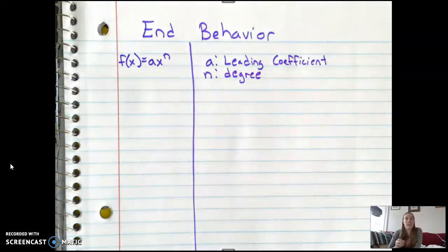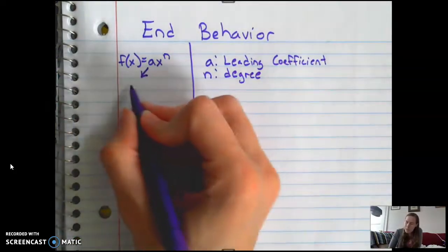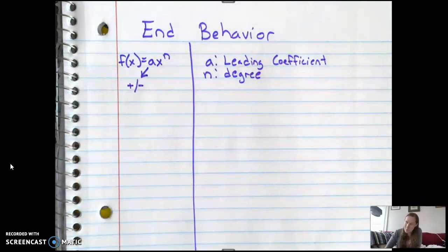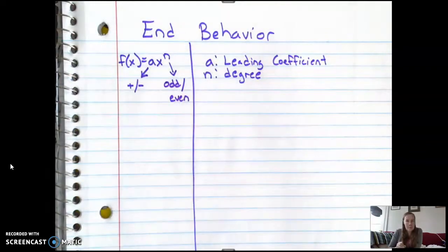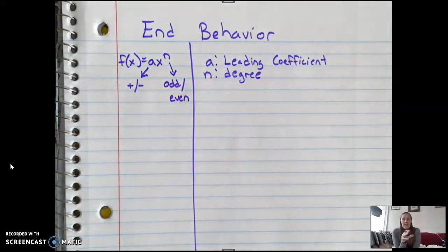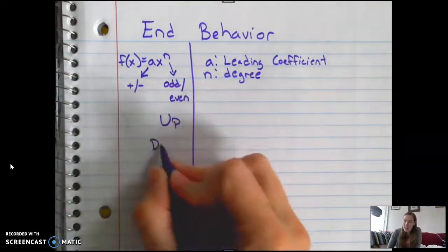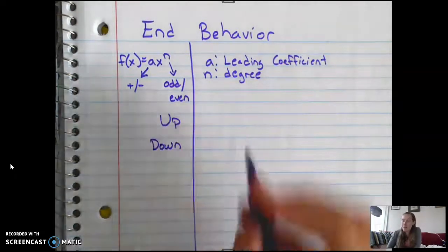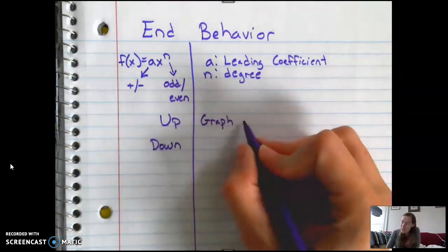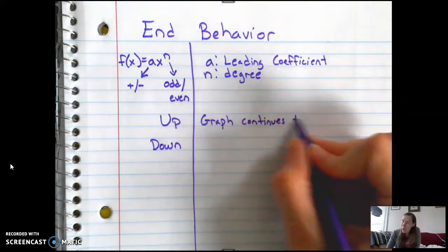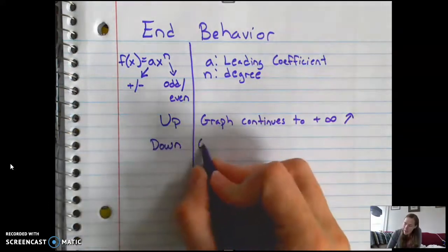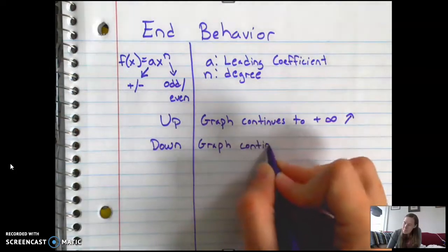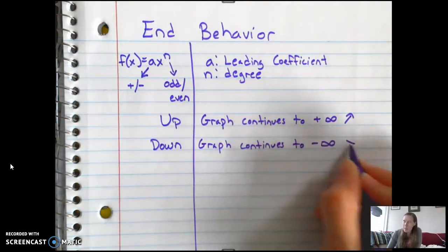So with the leading coefficient and degree, we're going to look for some things. With our leading coefficient, we're going to look to see is it positive or is it negative. With our degree, we're going to look to see if the number is odd or if the number is even. And the last thing before I make my little graphic organizer is what the words up and down mean in this context. So the word up in this context means the graph continues to positive infinity. Down is the opposite. So the graph continues to negative infinity.